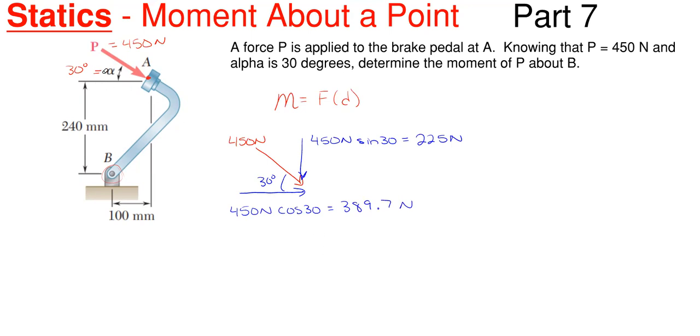All right, so essentially what we have done here is that we have removed this P force, and we have applied our horizontal and our vertical component forces here at A. Now, all we have to do is sum moments about point B utilizing these horizontal and vertical forces with the horizontal and vertical dimensions.